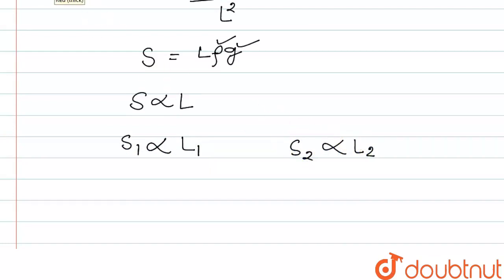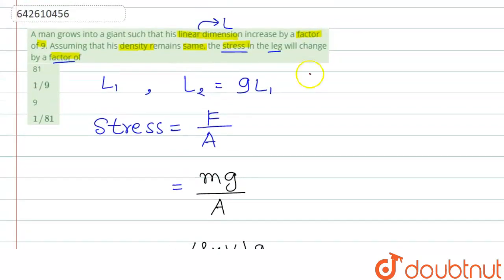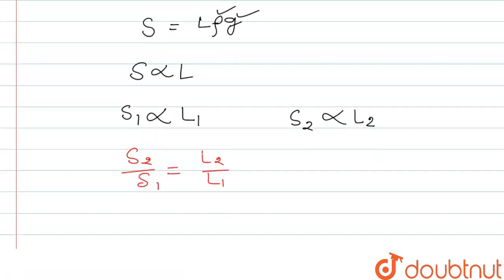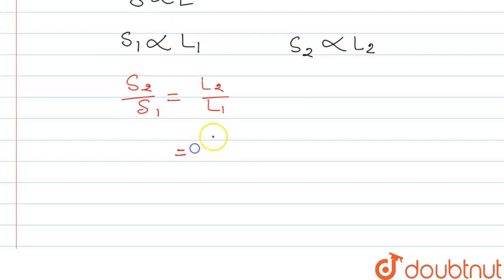So we can write the ratio S2 by S1 equal to L2 by L1. And here we see that L2 is equal to 9L1. So here we can write 9L1 divided by L1 and here S2 by S1.